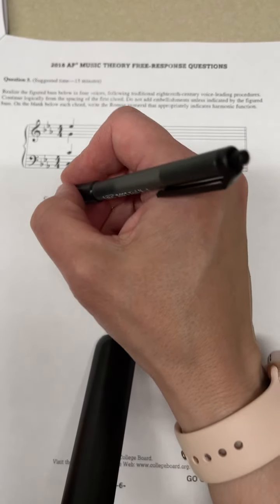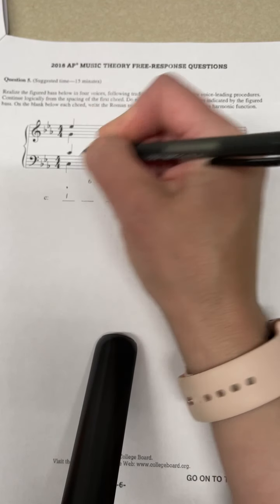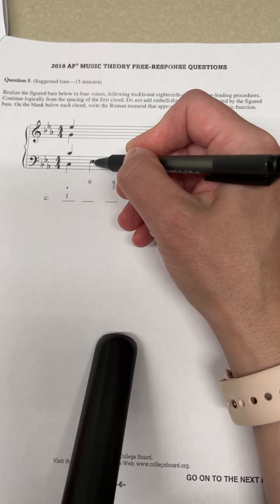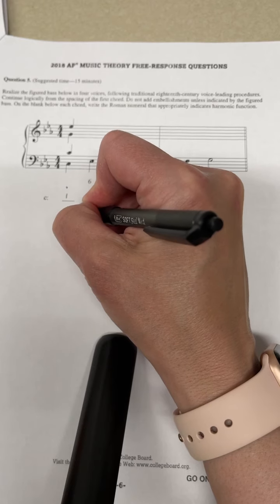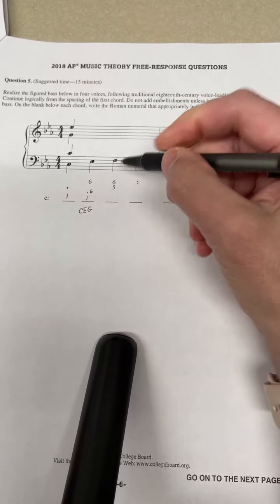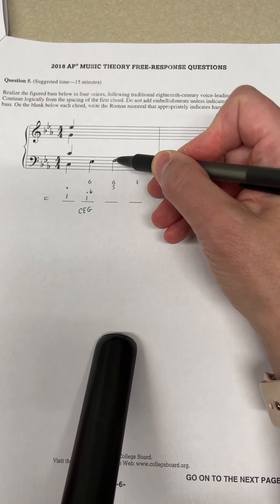So we're in C minor. Here, this is i, don't have to worry about anything. Six, I'm in first inversion, so when I see the E here I know it's the middle note, so it's C E G.